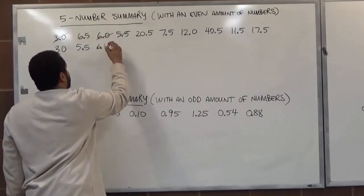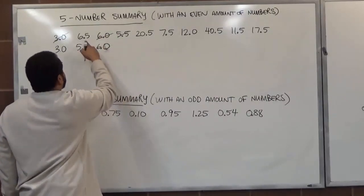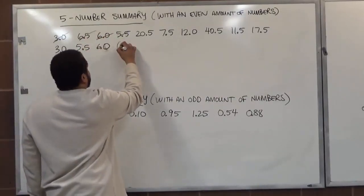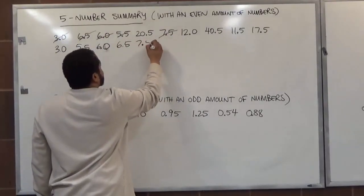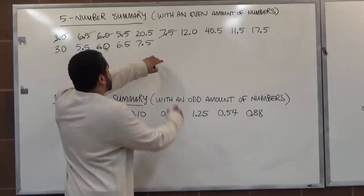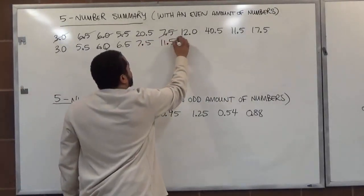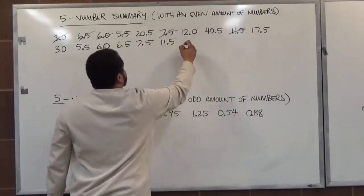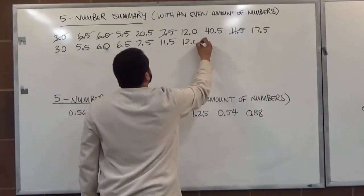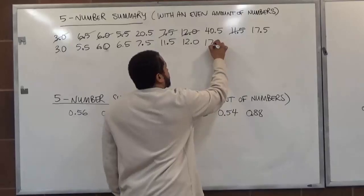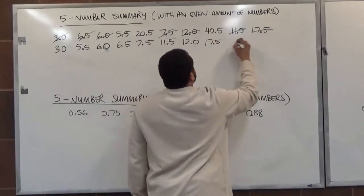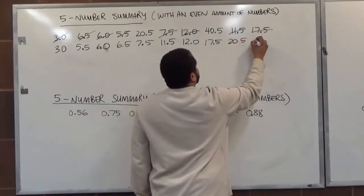After 6.0, we have the number 6.5. After 6.5, we see there's a 7.5 here. Let's bring that down. After 7.5, we have 11.5. After 11.5, there's 12.0. After 12.0, we have 17.5, followed by 20.5, and finally 40.5.